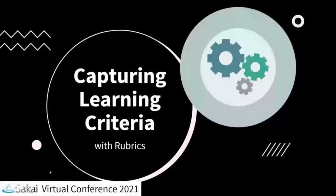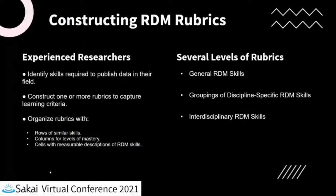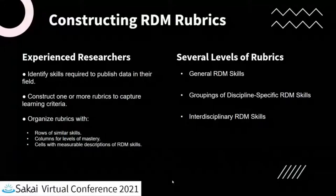One way to capture learning criteria is with rubrics. In this project, experienced researchers from their fields identify the skills required to publish data, constructing rubrics with rows of similar skills, columns for mastery levels, and cells with measurable descriptions. RDM — research data management — rubrics are being produced at several levels: a general one, field-specific ones covering physical, biological, social, and technical sciences, and an interdisciplinary rubric for innovative groups.